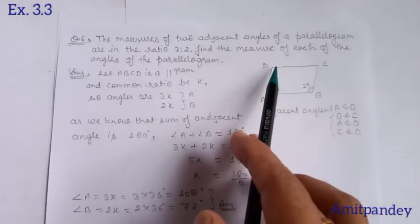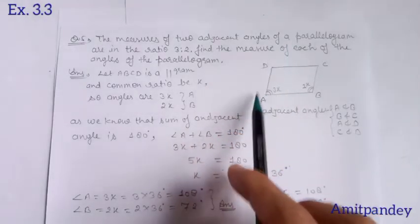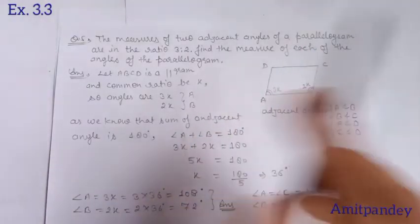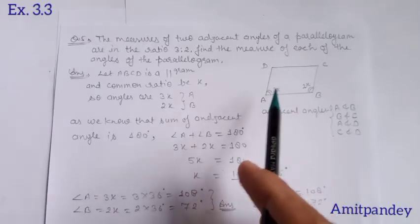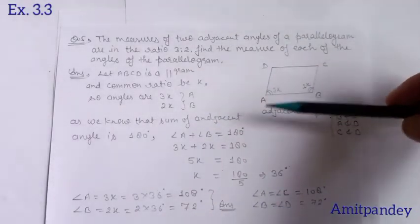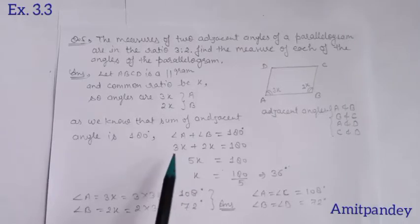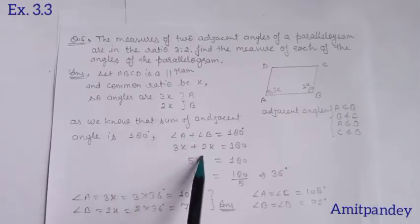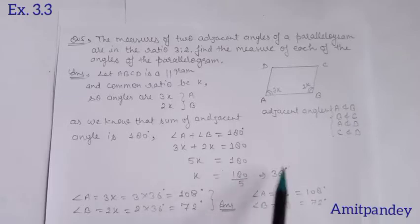How is it 180°? Because the opposite sides are parallel, and one side like AD or BC acts as a transversal line. The sum of angles on one side of a transversal line is 180°. Similarly here — these two lines are parallel, this is the transversal line, so the sum of angles on one side of the transversal is 180°. So angle A plus B equals 180°. A is 3x and B is 2x, so 3x plus 2x equals 180°, giving 5x equals 180°, then x equals 180 divided by 5, which gives x equals 36.